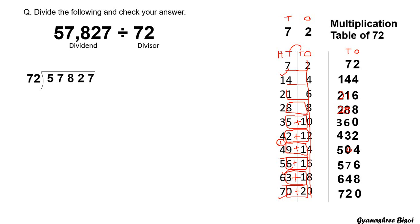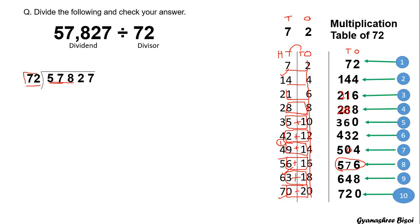Now I will move to the division part. The divisor is a two-digit number, so I take two digits from the dividend: 57. But 57 is less than 72, so I take another digit, making it 578. I look in the multiplication table for a number nearest to or equal to 578. That is 576 — 72 eights are 576. So I write 8 in the quotient and 576 below.